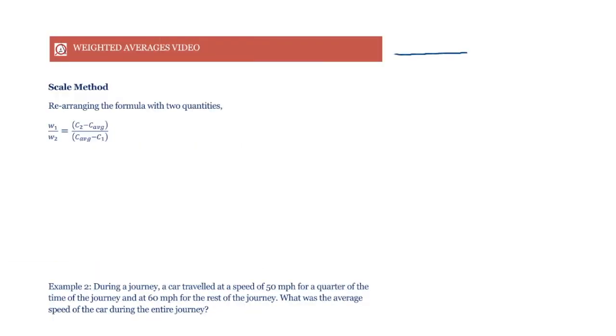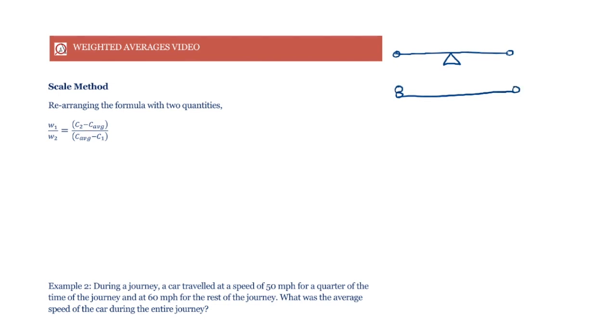Consider a seesaw. If we put two equal weights on its two extremes, the fulcrum would need to be right in the middle to balance it out. But if we put some extra weight on one of the extremes, then the fulcrum needs to be closer to that end to balance the weight.